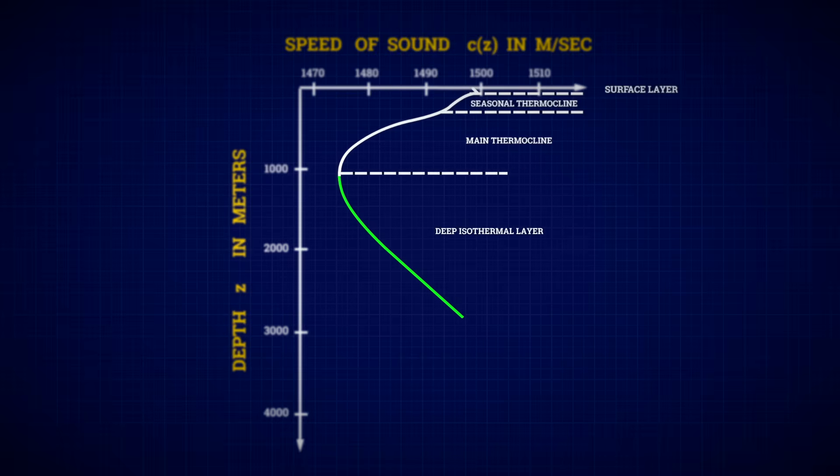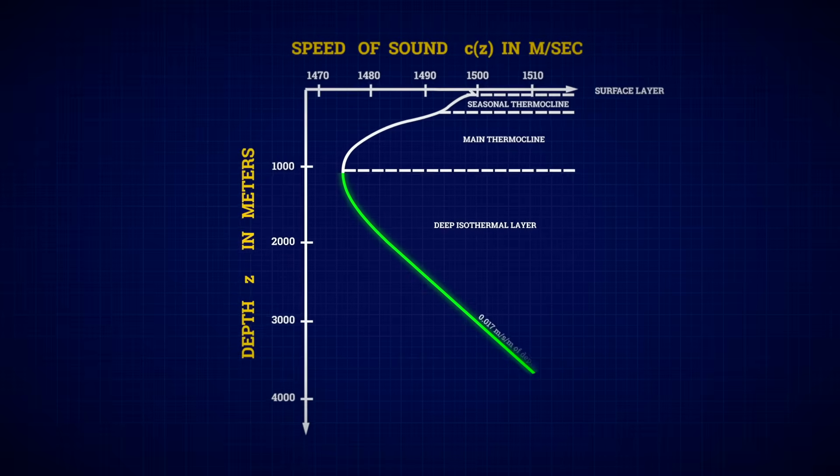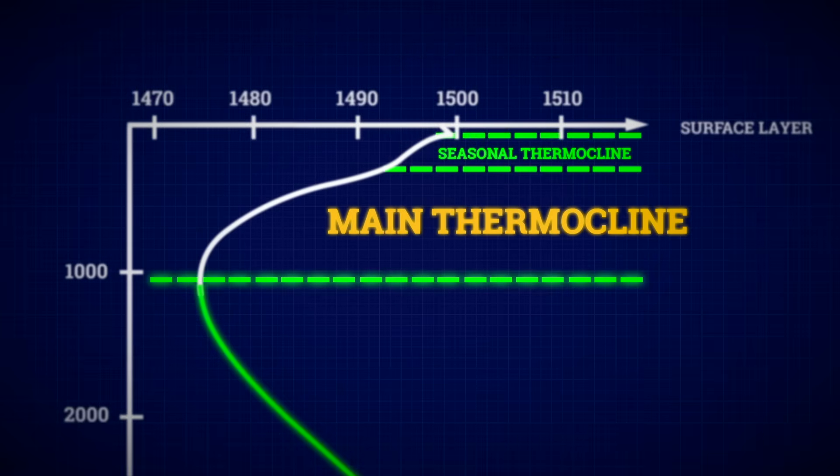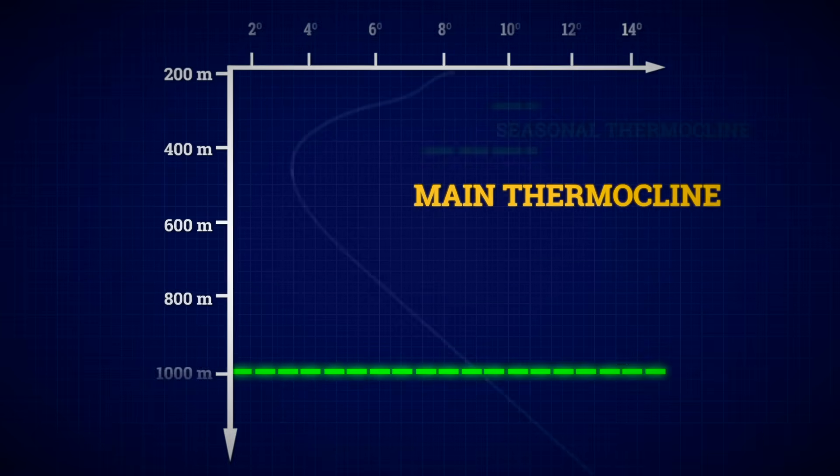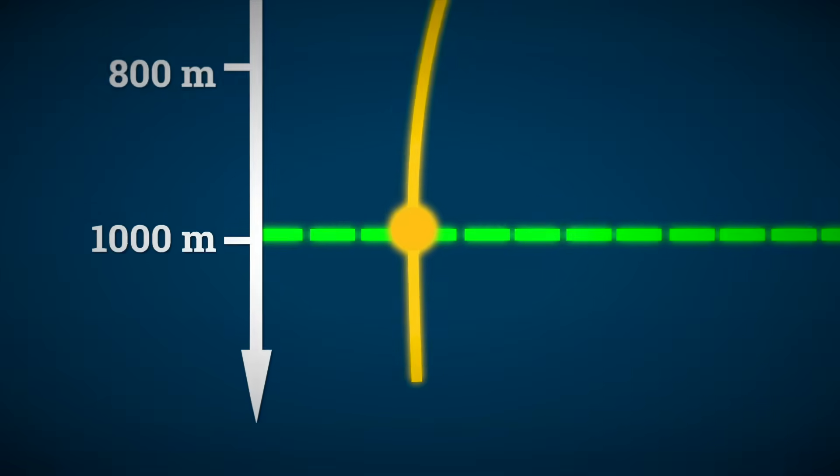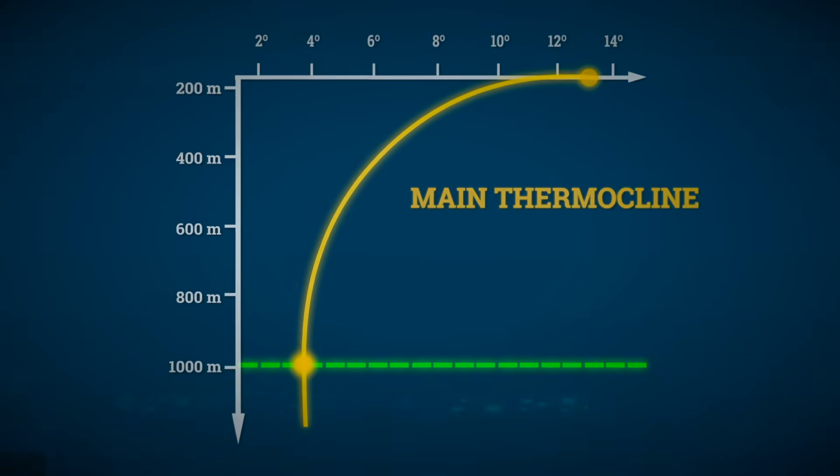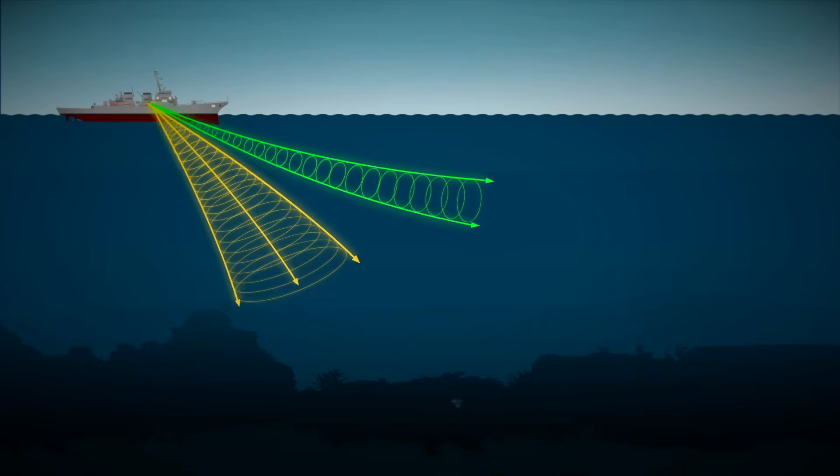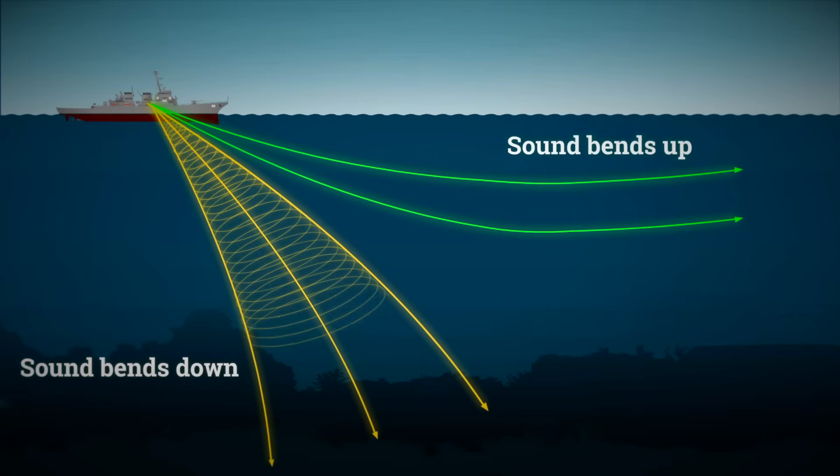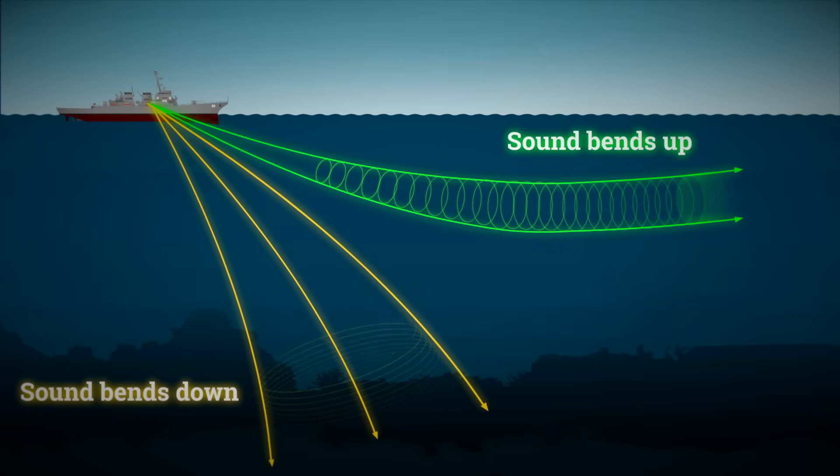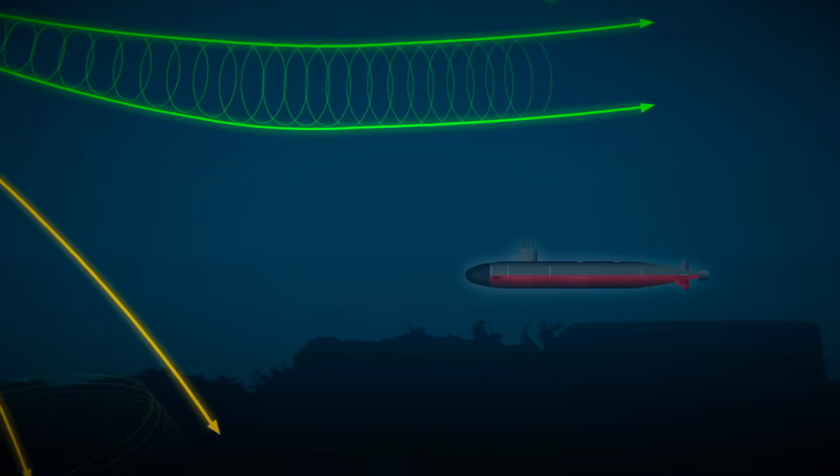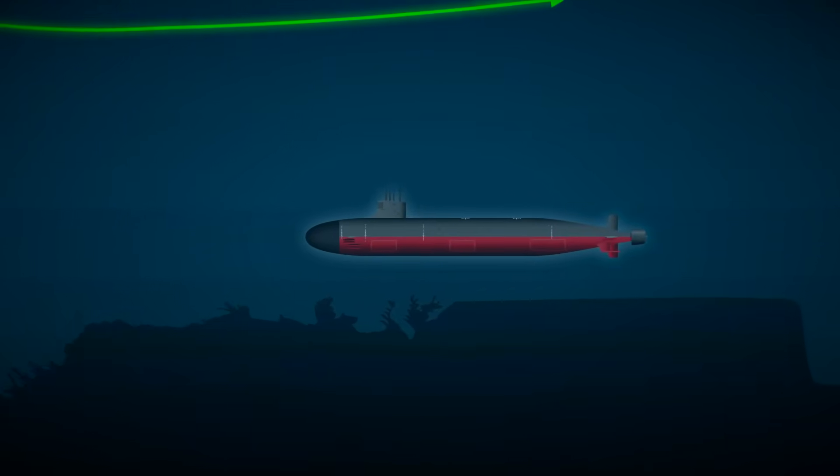In many parts of the ocean, there's a point where sound travels slowest, forming a natural acoustic trap. One of the most important features this creates is the thermocline, a layer where the temperature, and so the speed of any sound, drops quickly as you go deeper. When sound waves hit this layer, they either refract or reflect, often trapping sound above or below it. A submarine sitting below the thermocline can be almost invisible to sonar scanning from above.